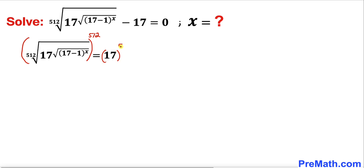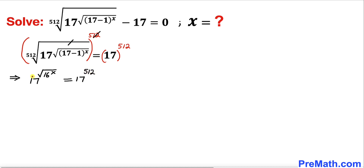Now we can see that this 512 and this radical undo each other, so we are left with 17 power square root of 17 minus 1 — which gives us 16 — whole power x, equal to 17 power 512. Since our bases on both sides are 17, we can equate our exponents.